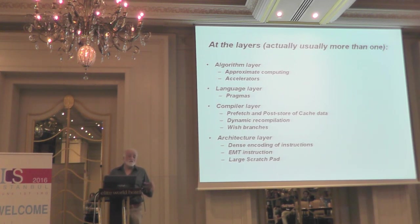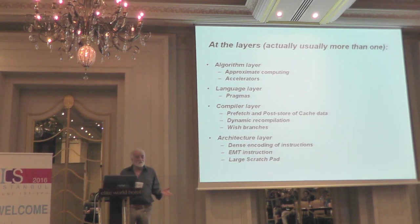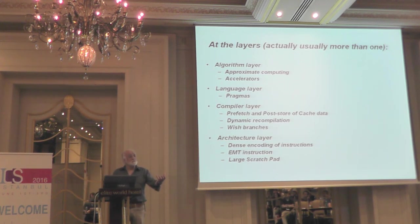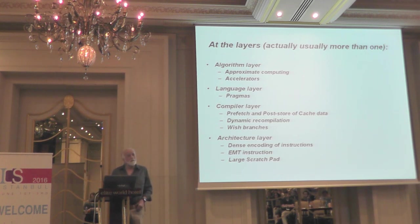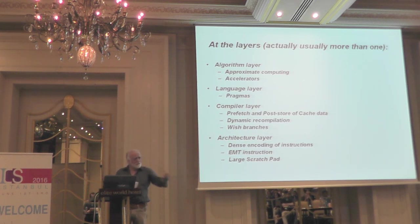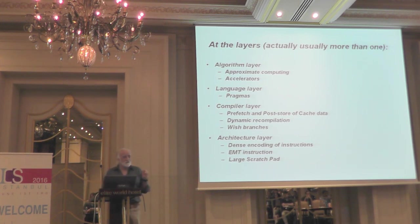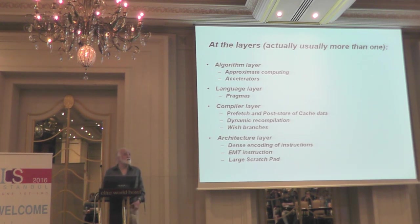We've done this to a small extent with the fetch opcode, which doesn't do useful work but makes sure data is in the first-level cache before the instruction that needs it. We have a load instruction that takes cache misses all the way to memory — hundreds of cycles. A fetch instruction lets the compiler prefetch from memory through the third and second levels down to the first level cache.